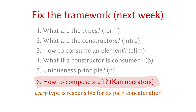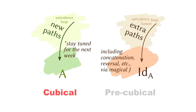Just to review the picture again: previously we were using the ID type to solve our problem. Now we have to be more responsible — each type needs to provide more structures to make sure that it has enough paths in every type that we're defining. That's all. Stay safe and stay healthy. We'll see you on Thursday.